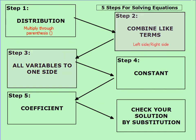Step three deals with getting all our variables to one side of the equation. If you have a variable both to the left and to the right of the equal sign, we're not going to be able to solve that equation. So we need to get all variables together by adding or subtracting one of the variables from both sides to combine it all into one term.